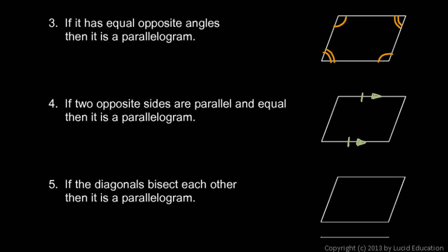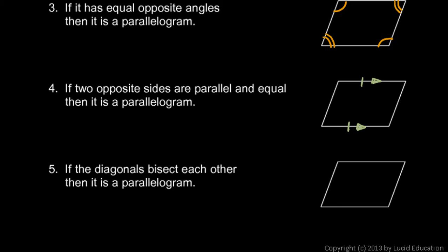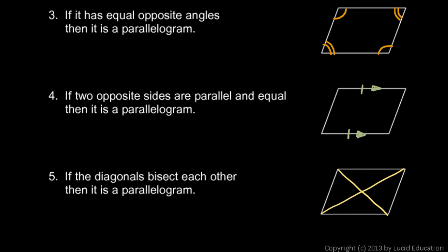Number five: if the diagonals bisect each other, then it is a parallelogram. Sketch in the diagonals — if they bisect each other, that means this piece is equal to that one, and this piece is equal to that one. Let's mark the diagram accordingly with matching tick marks on each half. It can be proven that if the diagonals bisect each other, then it must be a parallelogram. The first statement — the definition — need not be proven, but the other four we will prove.